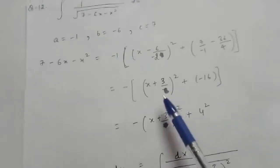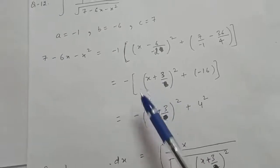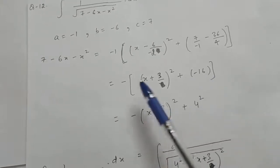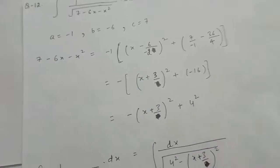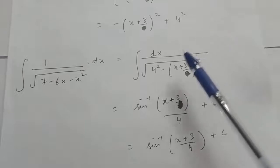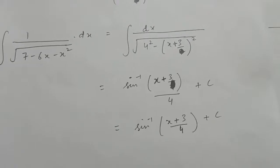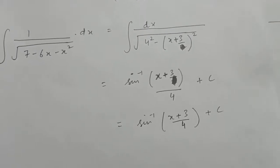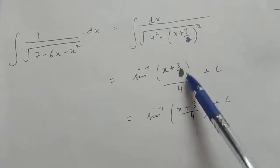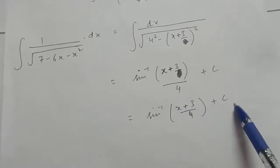This equals 4² minus (x + 3)², since minus 16 is minus 4² and the outer minus makes it plus. So the integral becomes integral of 1 upon root (4² minus (x+3)²). Using the formula sine inverse (x/a), with x being (x+3) and a being 4, the answer is sine inverse ((x+3)/4) plus c.